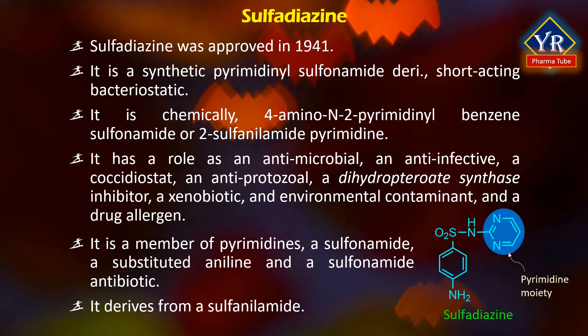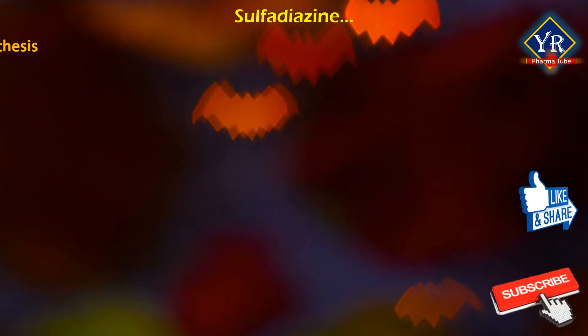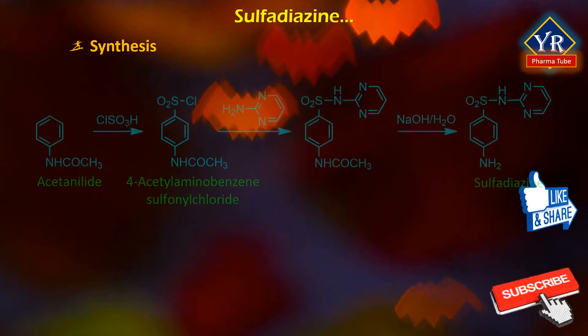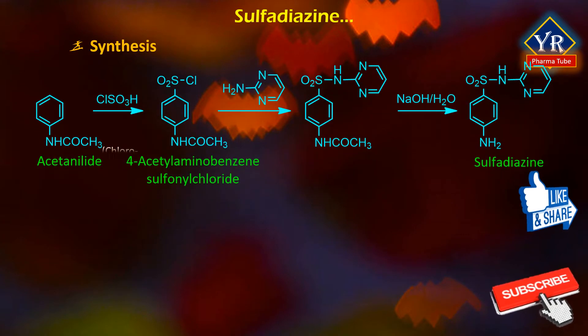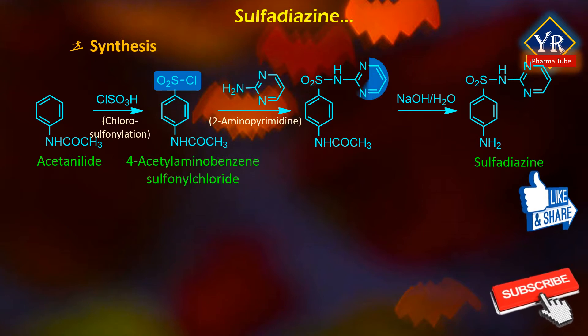It derives from a sulfonylamide and is a conjugate acid of sulfadiazinate. For sulfadiazine synthesis, acetonylide is chlorosulfonylated to give 4-acetyl-amino-benzene sulfonyl chloride, which is reacted with 2-amino-pyrimidine. The so-formed compound on alkaline hydrolysis yields sulfadiazine.